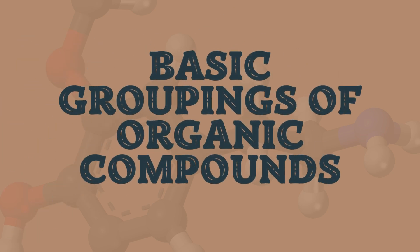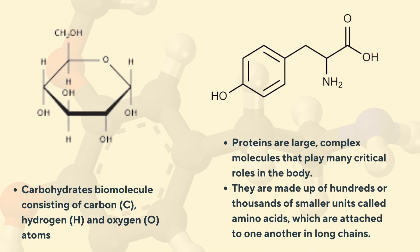Let's look at the basic groupings of organic compounds. We've got four main groups. Carbon will combine with four other elements to make up most of the organic tissue components in living organisms. These main groups are: proteins, carbohydrates, lipids, and nucleic acids.